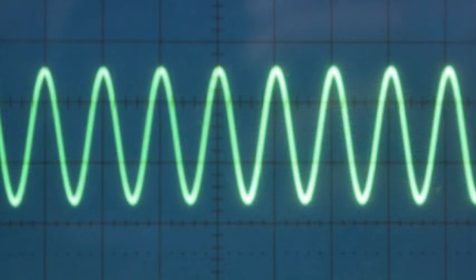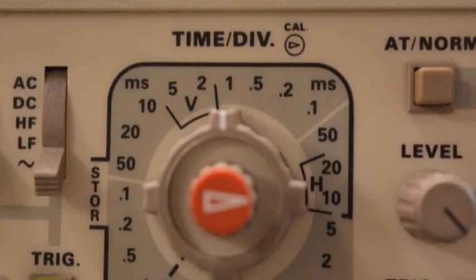The screen shows that nine complete waves are crossing nine complete squares. In other words, one wave per square. Each square on the screen represents one millisecond, therefore the frequency of this wave is 1000 Hz.